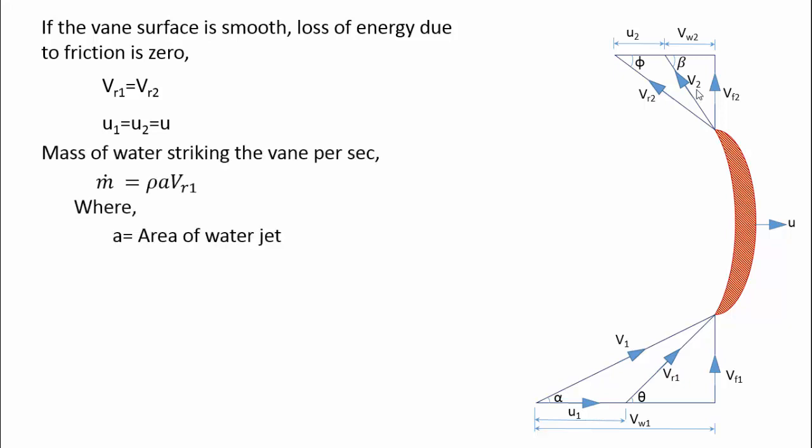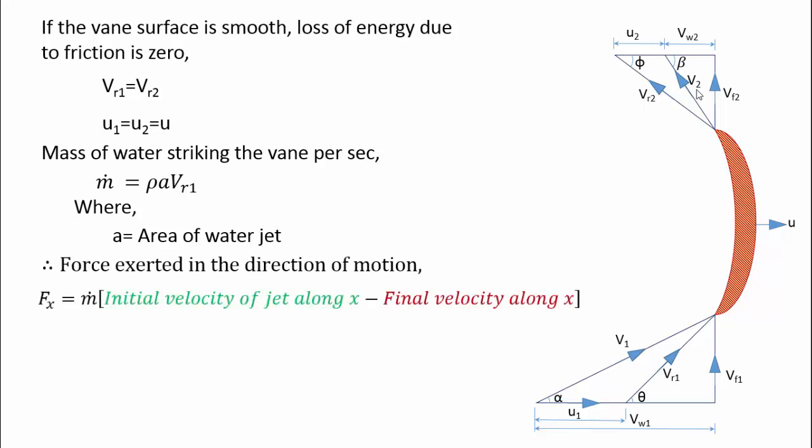If we want to quantify the force exerted by the jet on the vane, we must know the mass of water striking the jet per second. Mass flow of water per second is equal to ρ·A·Vr1. Therefore, force exerted in the direction of motion is equal to mass flow rate times initial velocity minus final velocity along the direction X.